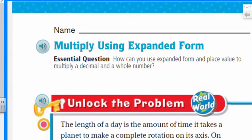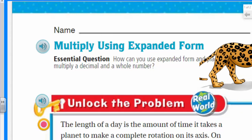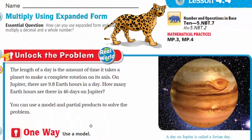I love this. It looks like we're gonna be using some area models. Essential question: How can you use expanded form and place value to multiply a decimal and a whole number? We're gonna learn that in this lesson. First, however, we have to unlock the problem.